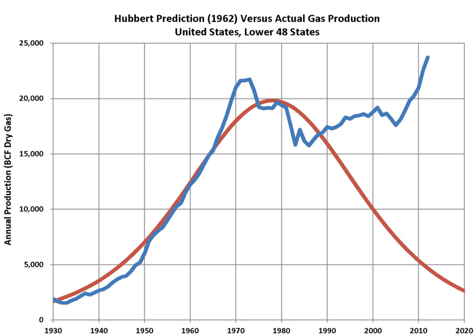The Hubbert peak theory is based on the observation that the amount of oil under the ground in any region is finite; therefore, the rate of discovery, which initially increases quickly, must reach a maximum and decline. In the U.S., oil extraction followed the discovery curve after a time lag of 32 to 35 years. The theory is named after American geophysicist M. King Hubbert, who created a method of modeling the production curve given an assumed ultimate recovery volume.